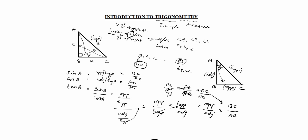Instead of angle A, we will take angle theta here. So theta is here, the opposite side changes, the adjacent changes, but the hypotenuse won't change — the same only comes. Right angle opposite is hypotenuse, or the longest side is the hypotenuse. We will write sin C: sin C equals opposite AB by AC.